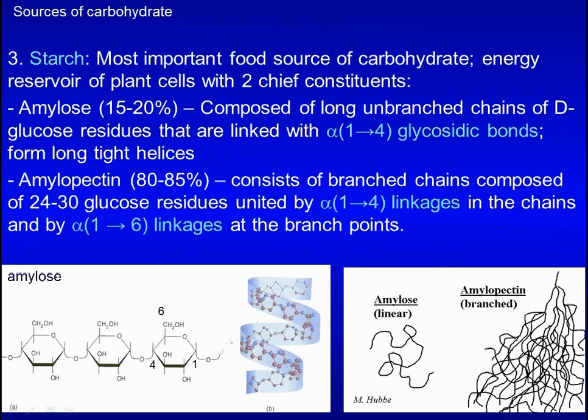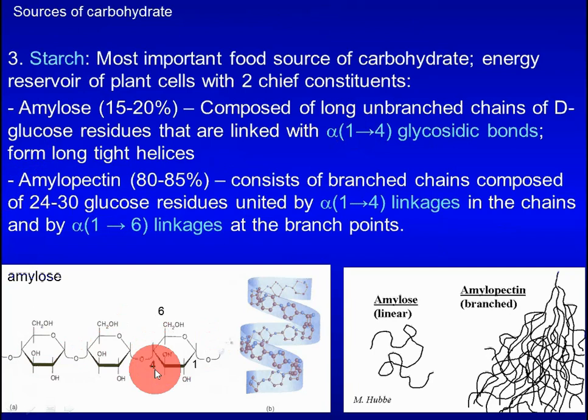The most important dietary carbohydrate is starch, which is derived from plants. The two main components of starch are amylose and amylopectin. Amylose is composed of long chains of D-glucose residues linked by alpha-1,4 glycosidic bonds in a linear fashion. Amylopectin is composed of branched chains of D-glucose residues linked by alpha-1,4 linkages in the chain and by alpha-1,6 linkages at branch points.